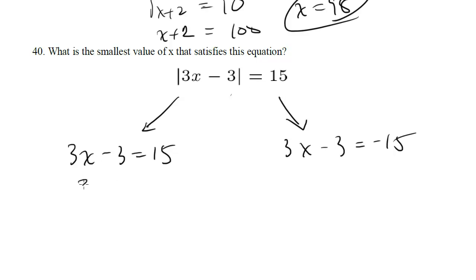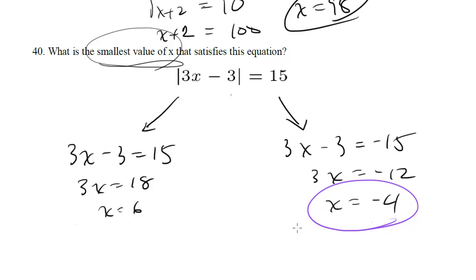So we're going to solve for both of these. Here we're going to get 3x equals 18 or x is 6. Here we're going to get 3x equals negative 12 or x is negative 4. Now we've got two answers, but the question wants to know the smallest value of x. So that's going to be negative 4 because of course that's negative and smaller than the other answer.